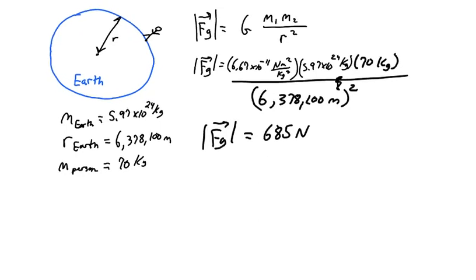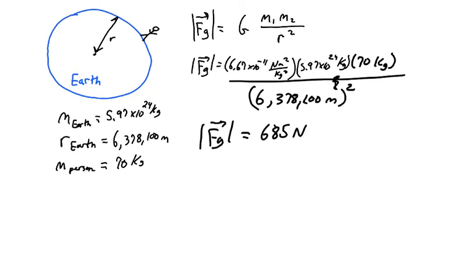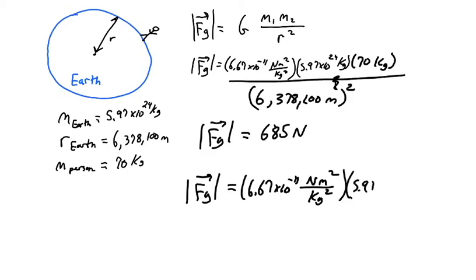Now, just out of curiosity, let's say we didn't know the mass of the person. What would we get as a result there? So instead, let's make this force of gravity equals still 6.67 times 10 to the negative 11th Newton meters squared per kilogram squared times the mass of the earth, 5.97 times 10 to the 24th kilograms. Since we don't know the mass of the person, let's just call that m divided by the radius of the earth squared, 6,378,100 meters squared.